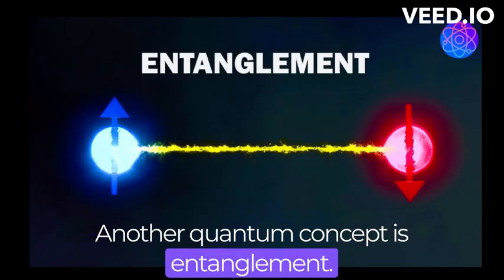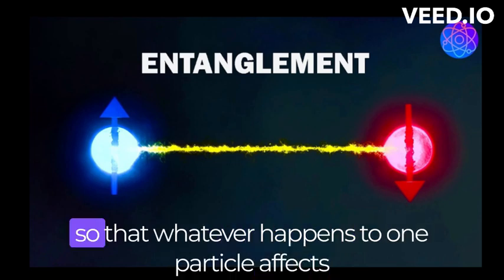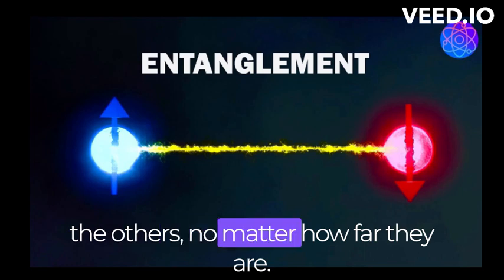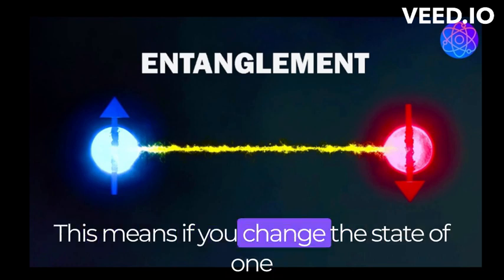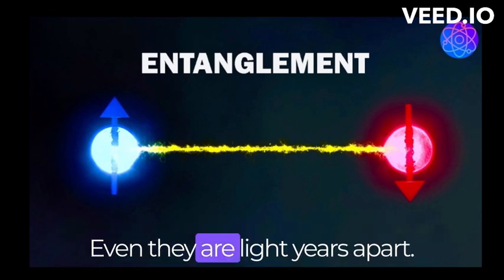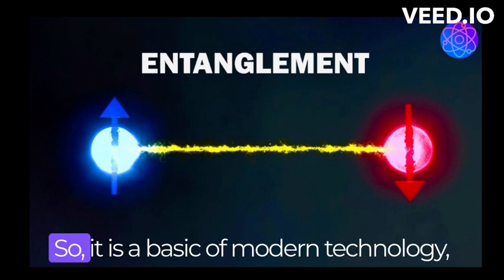Another quantum concept is entanglement. This is where two particles can become linked so that whatever happens to one particle affects the other, no matter how far they are. This means if you change the state of one particle, the state of the other particle will instantly change, even if they are light years apart.